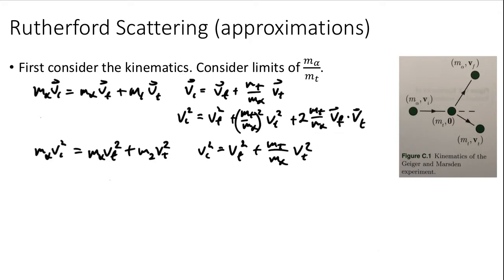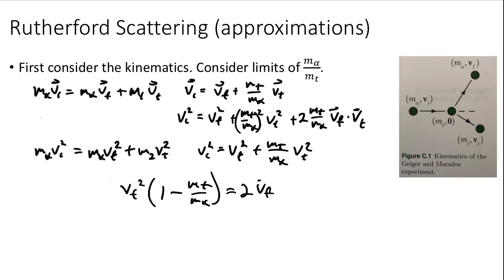Now we have two equations for v_i². Setting the right-hand sides equal to each other, the v_f terms cancel. Dividing out by one factor of m_alpha / m_t and collecting all factors of v_t on one side, we find that v_t² times (1 − m_t / m_alpha) equals 2 v_final · v_t.